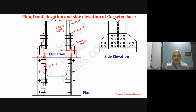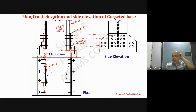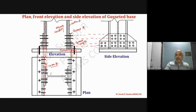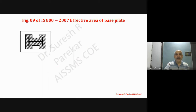In the side elevation you can see bolt lines — one, two, three, four — and these lines should align along the column. Gusseted bases are used for columns with heavy loads, and that is why we have to provide a cover plate.